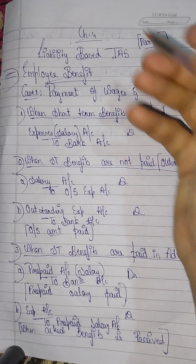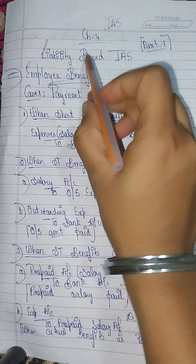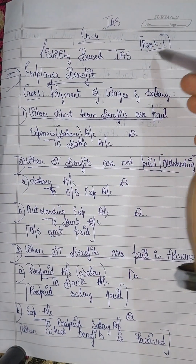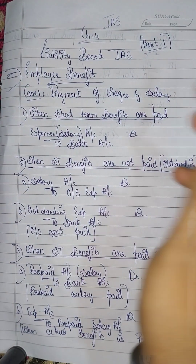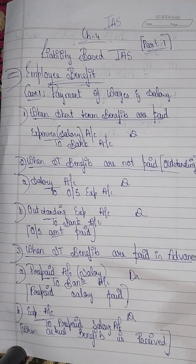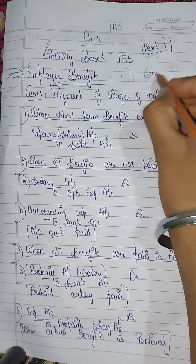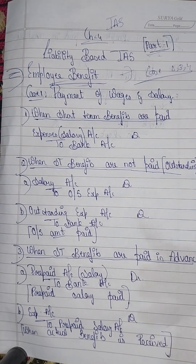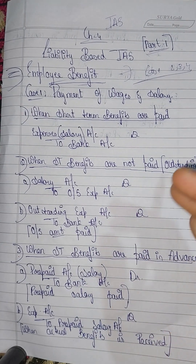So today we will explain the subject of IAS Chapter 4, which is liability-based accounting standards. Part 1 is explained, and we will explain the main problems on employee benefits basis. So 4 cases are available and we will explain all 4 cases.